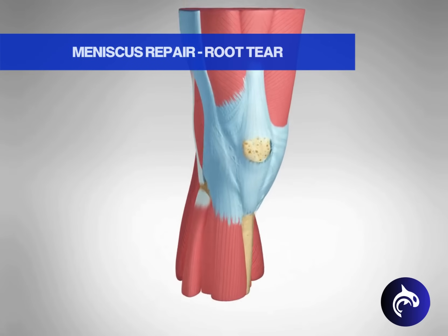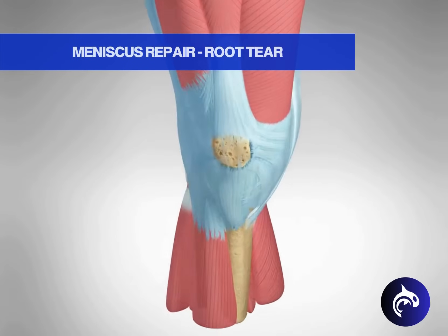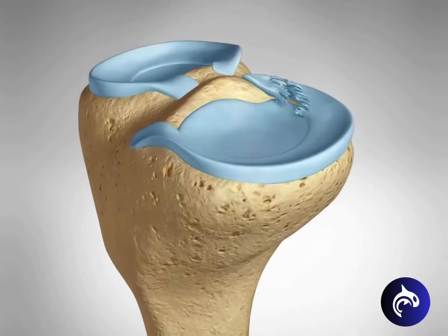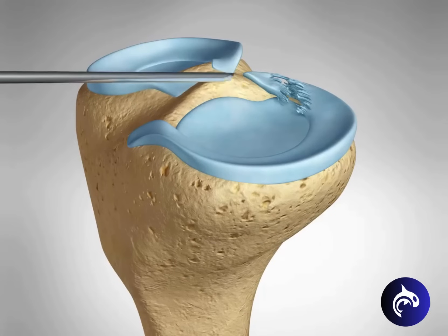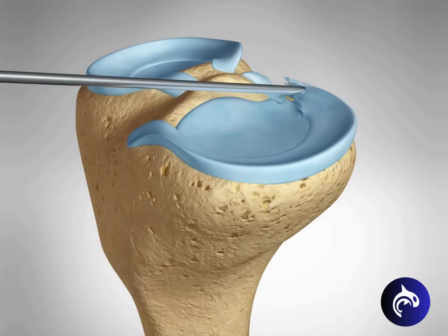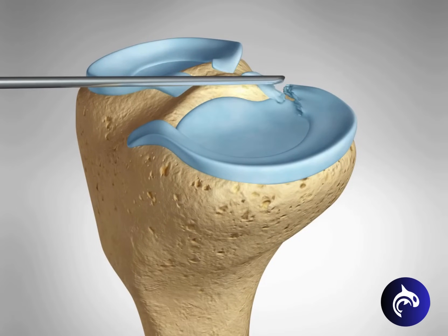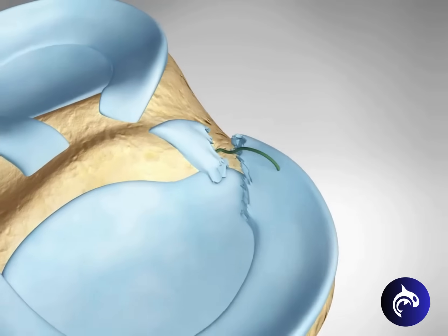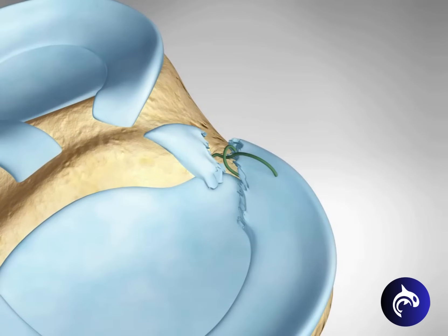Because the roots of the meniscus are responsible for transmitting weight evenly across the surface of the tibia, a root tear requires a more extensive repair. To ensure the root is reattached properly, the surgeon will drill a small hole from the outside of the tibia into the knee joint next to the natural attachment of the meniscus root.